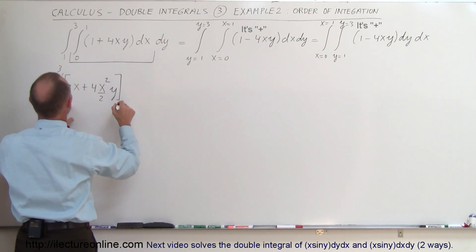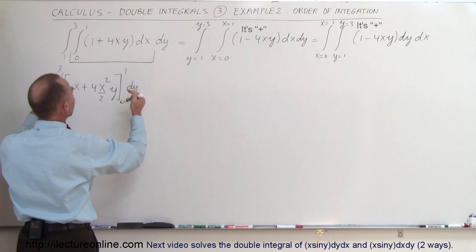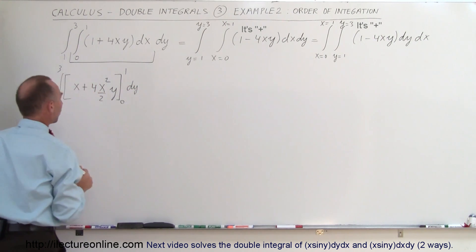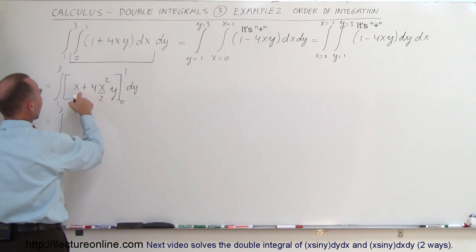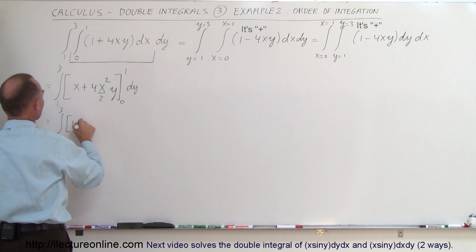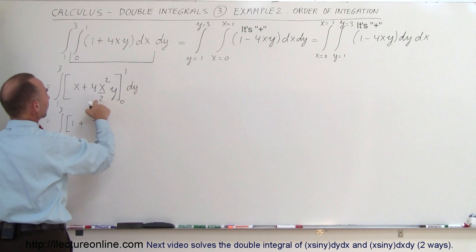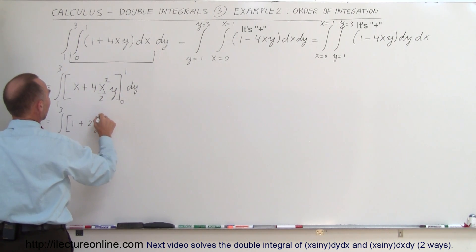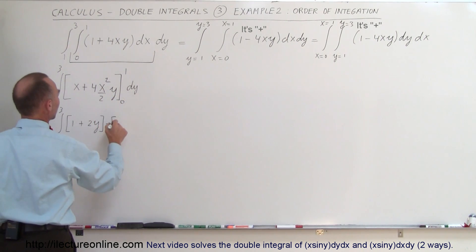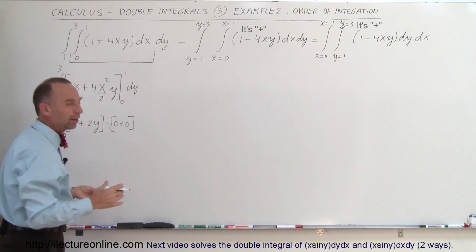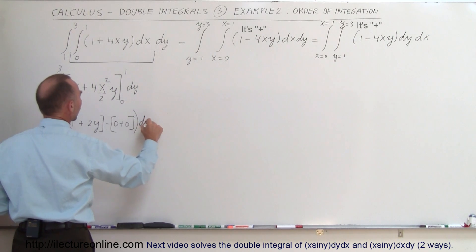Now we plug in the x limits from 0 to 1, and we still write dy because whatever this becomes we then integrate it again over y. So this is equal to the integral from 1 to 3 of: plugging in the upper limit x equals 1, we get 1 plus 2y. Plugging in the lower limit x equals 0, we get 0 plus 0. So the integrand simplifies, and the whole thing is integrated over dy.